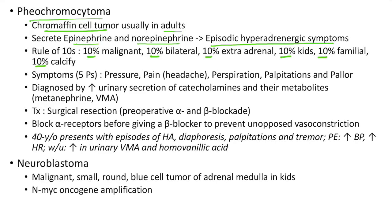Pheochromocytoma symptoms can be remembered by the mnemonic 5Ps: pressure, pain (i.e., headache), perspiration, palpitations and pallor. It is diagnosed by elevated urinary secretion of catecholamines and their metabolites like metanephrine and vanillylmandelic acid (VMA). Pheochromocytoma is treated by surgical resection. Before surgical resection, we have to give preoperative alpha and beta blockade. It is important that we block alpha receptors before giving a beta blocker to prevent unopposed vasoconstriction.